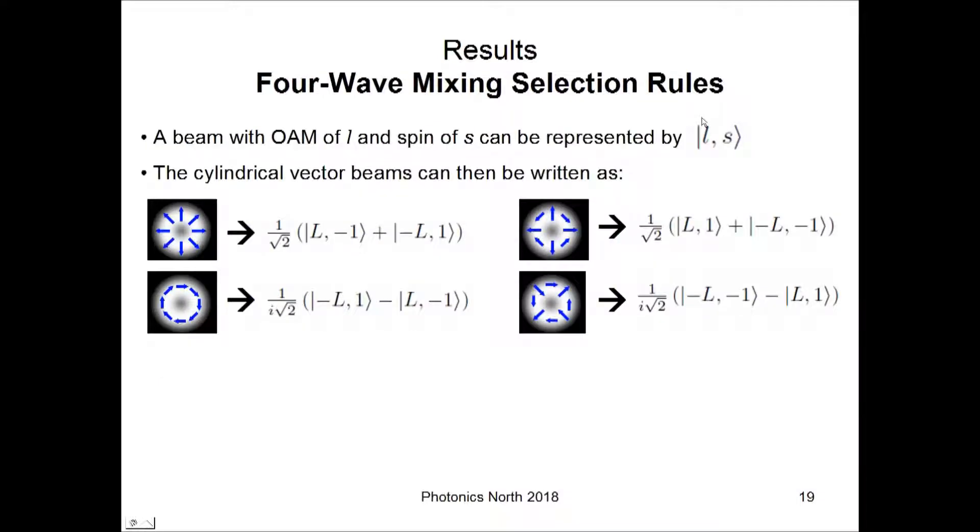Before I can get directly to the selection rules, I need to establish some notation. First of all, we're going to describe a beam with OAM of L and spin of s by this LS ket. And with that, these four cylindrical vector modes for given L and s can be described by these equations. This one I already presented earlier in the talk as an example. So, combining two anti-aligned OAM beams and adding them together, you get the radial mode. These are the corresponding equations of the other three modes.